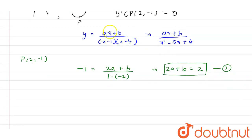Now, if we differentiate this equation, we get Y' is equal to A / (X² - 5X + 4) minus (AX + B)(2X - 5) / (X² - 5X + 4)².